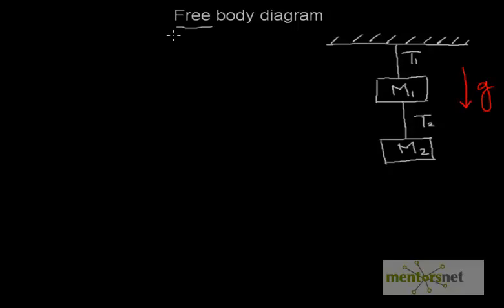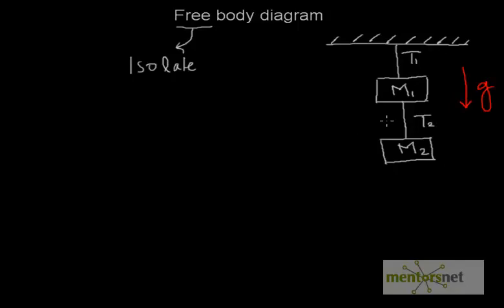Using free body diagrams, we take individual components — that is, this mass and this mass — and we isolate them. 'Isolate' is the keyword here. We analyze these smaller bits and then put it together to understand the entire problem.